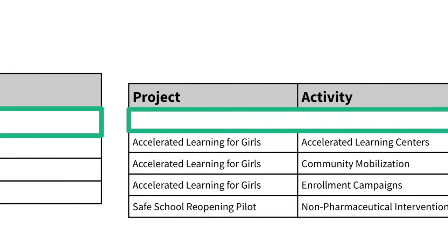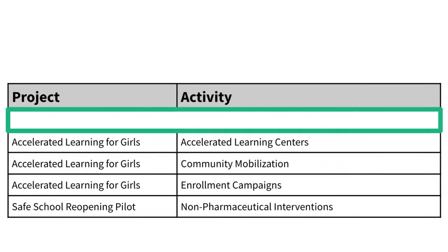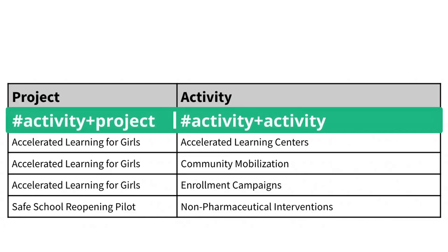To distinguish between programs, projects, and activities, you should always use hashtag activity, and then refine the meaning with the attributes program, project, and activity according to how the activity is classified.